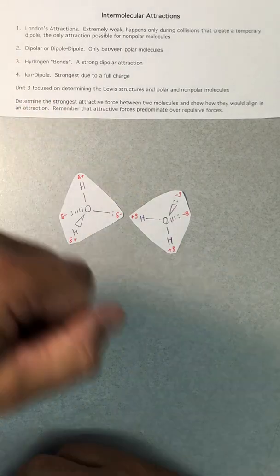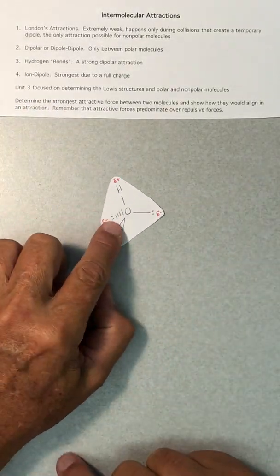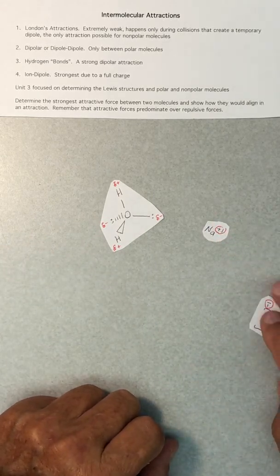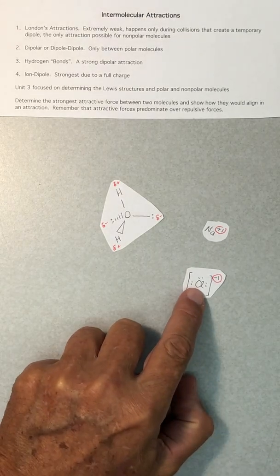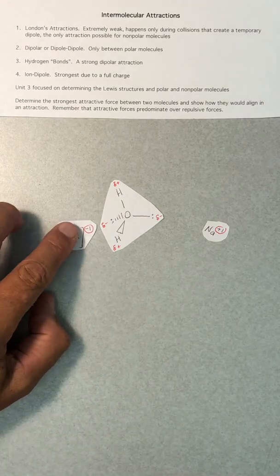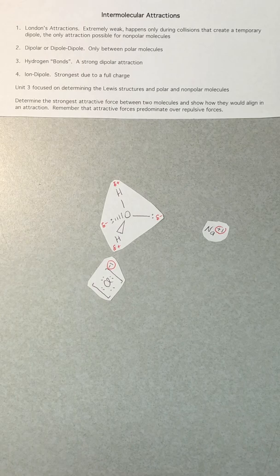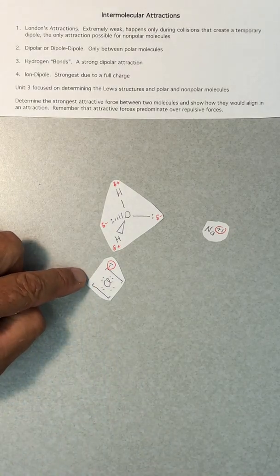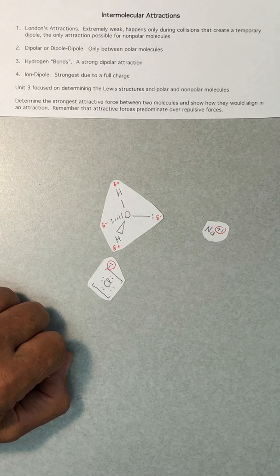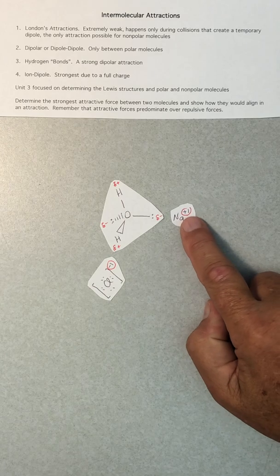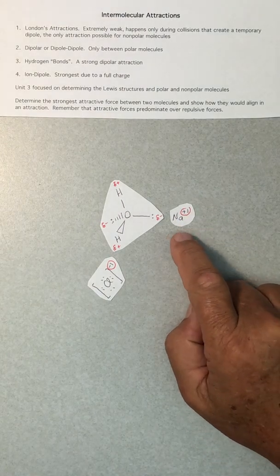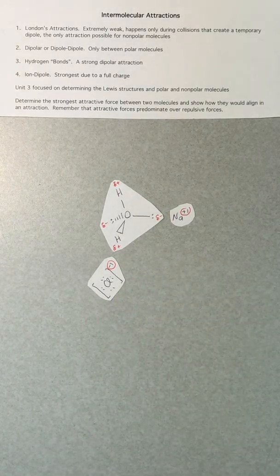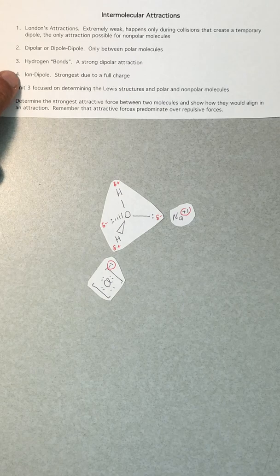The fourth type is ion-to-dipole attraction. A chloride ion approaching water will be attracted to the partial positive side of the water dipole. This attraction is strong because the ion carries a full charge — one extra electron more than protons — not just a partial charge. Similarly, a sodium ion is attracted to the partial negative side of water. This is why sodium chloride dissolves in water: you form strong ion-to-dipole attractions with both Na⁺ and Cl⁻.